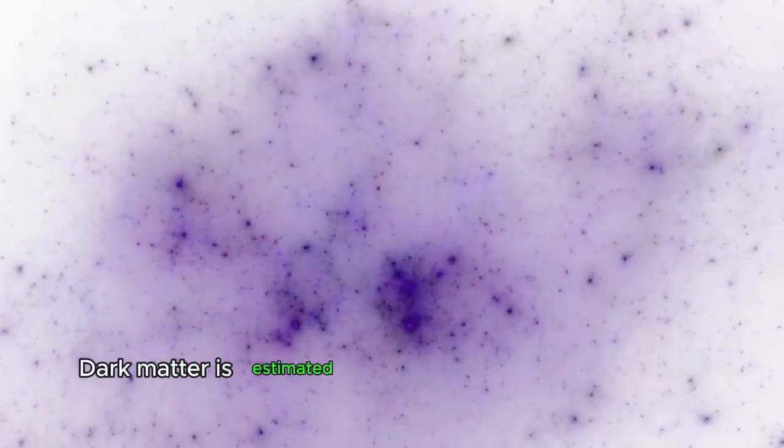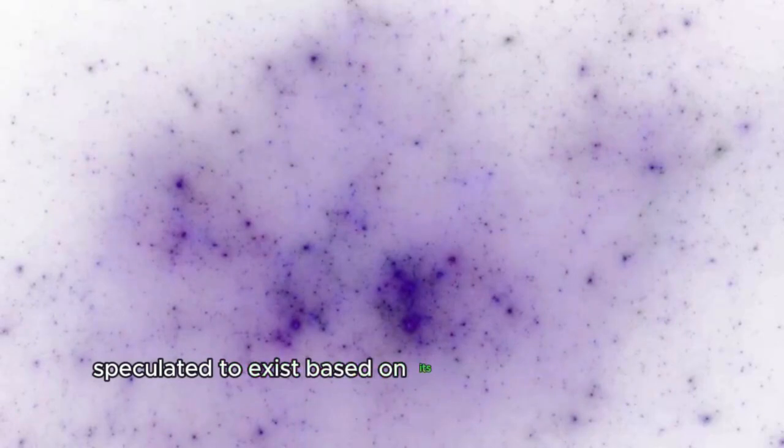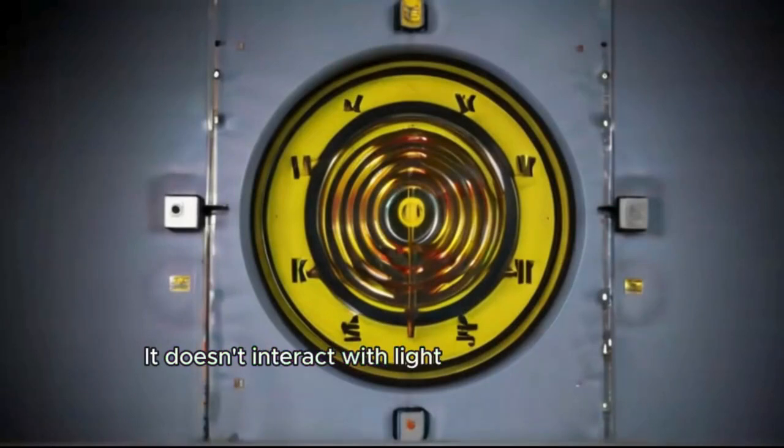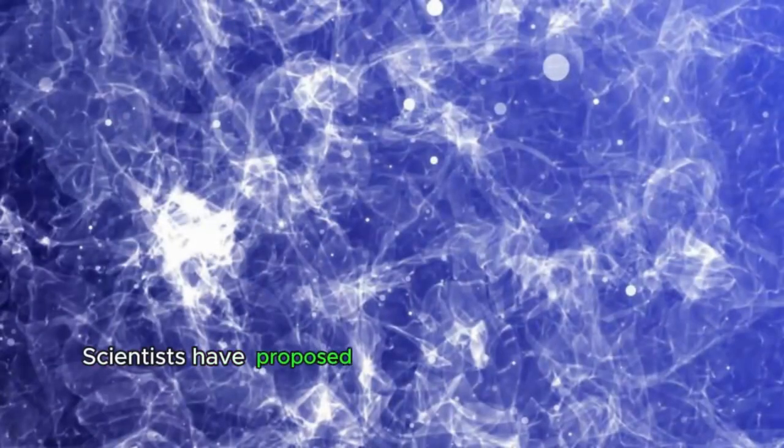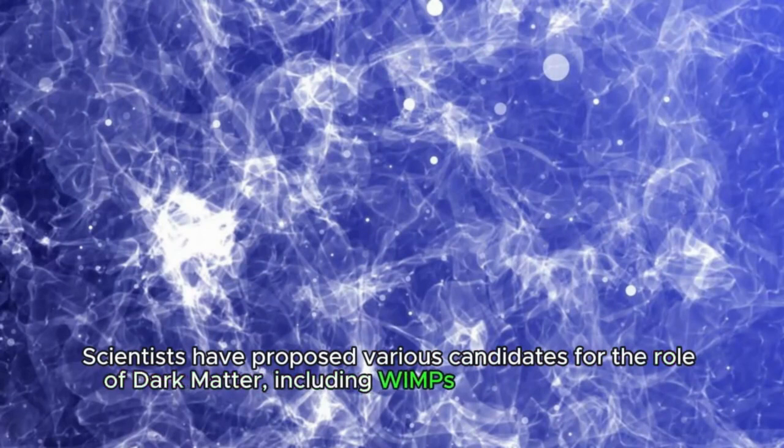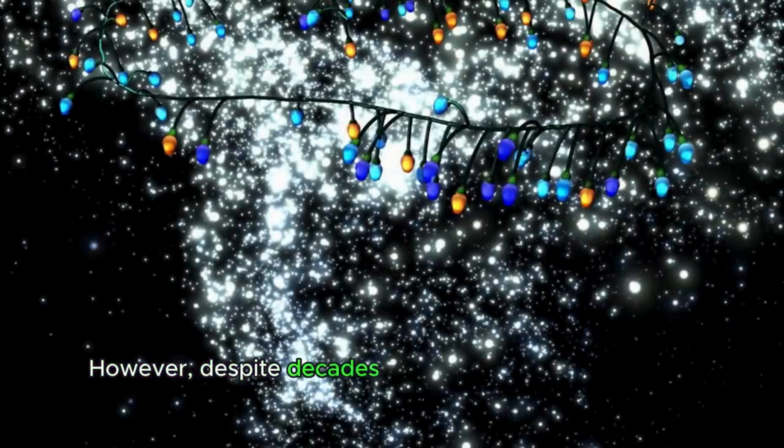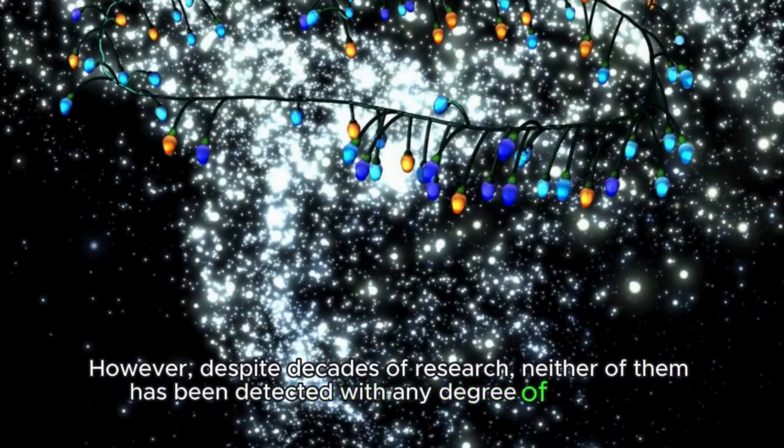Dark matter is estimated to make up about 27% of the universe, and is speculated to exist based on its gravitational effect on visible matter. It doesn't interact with light or other forms of electromagnetic radiation, which makes it difficult to detect directly. Scientists have proposed various candidates for the role of dark matter including WIMPs, weakly interacting massive particles, and axions. However, despite decades of research, neither of them has been detected with any degree of certainty.